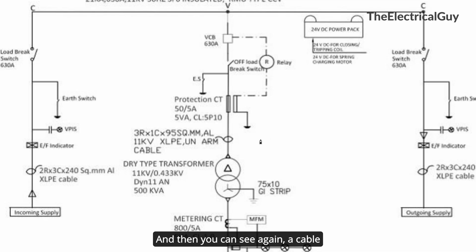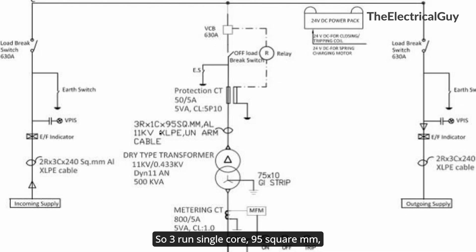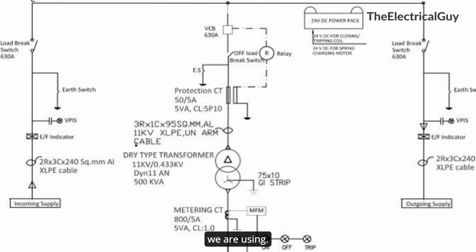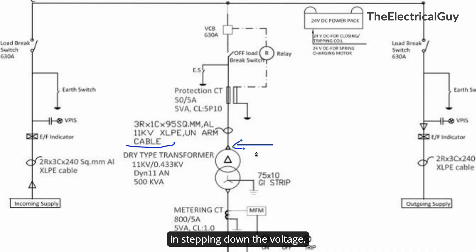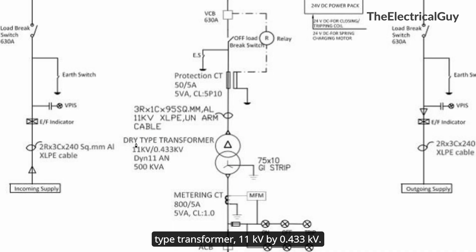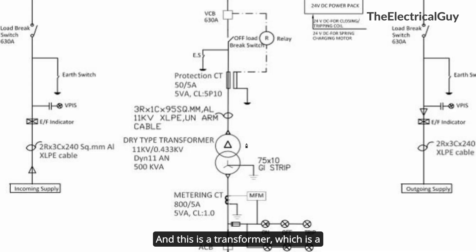Cable information is also provided: 3-run single core 95 square mm aluminum 11 kV XLPE cable, which connects to the transformer. This is a dry type transformer rated 11 kV by 0.433 kV, 500 kVA, with a delta-star connection.